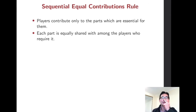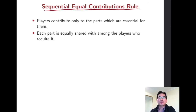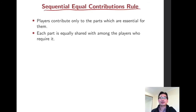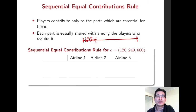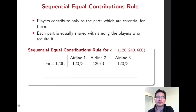Now we consider another allocation rule: the sequential equal contributions rule. Players contribute only to the parts which are essential for them, and each part is equally shared among the players who require it. We need to construct a 600-foot runway. The first 120 feet is required by all three airlines, so this part's cost is split equally among the three.